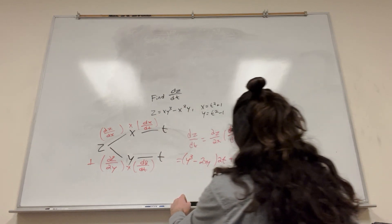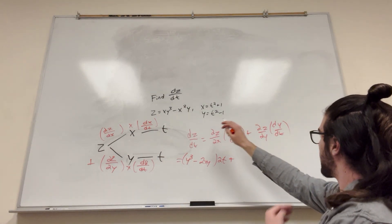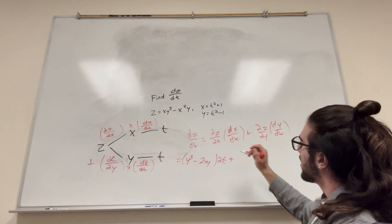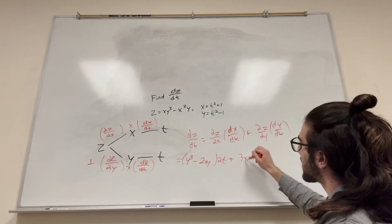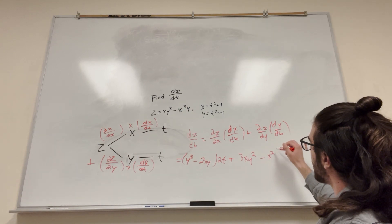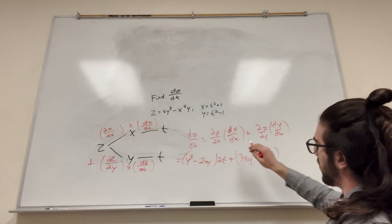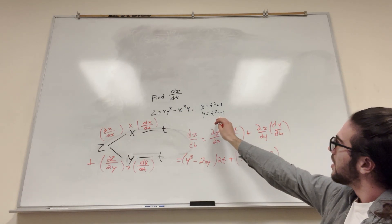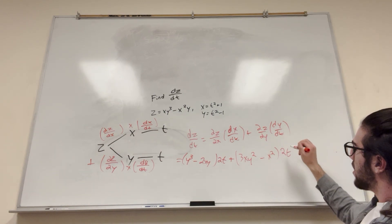And then plus... So the derivative of z with respect to y is going to be 3xy squared minus x squared. But then all of this times the derivative of y with respect to t, which is going to be 2t.